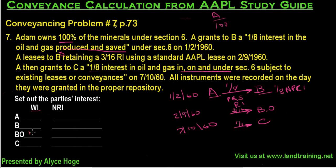A has now leased to Big Oil, so Big Oil owns 100% of the working interest. That means A owns 0%, B owns 0%, and C — even though C eventually acquired a mineral interest — because they took subject to the lease, C also has a 0% working interest at this point.